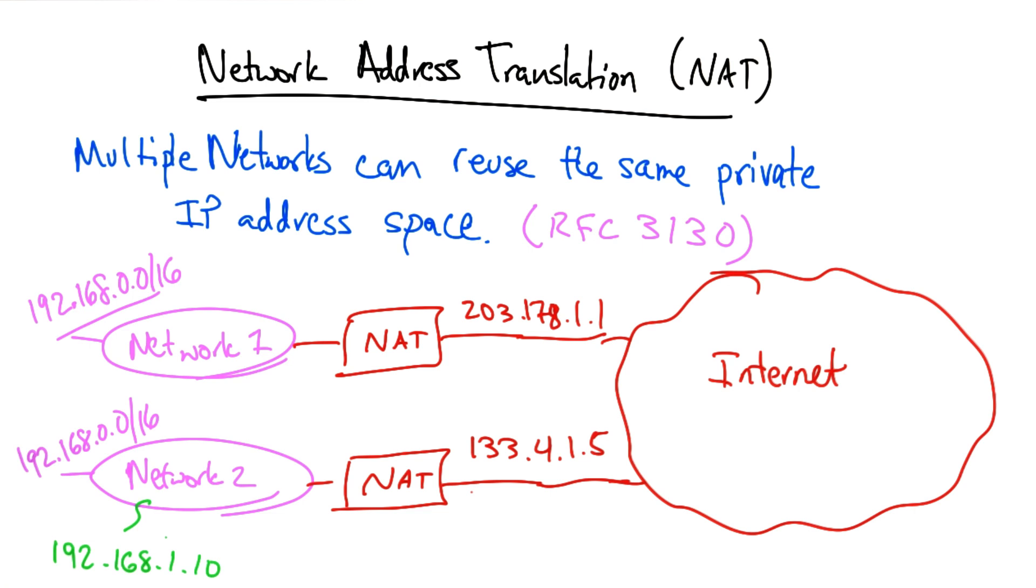Now a host back here, say 192.168.1.10, might send a packet towards a global internet destination.